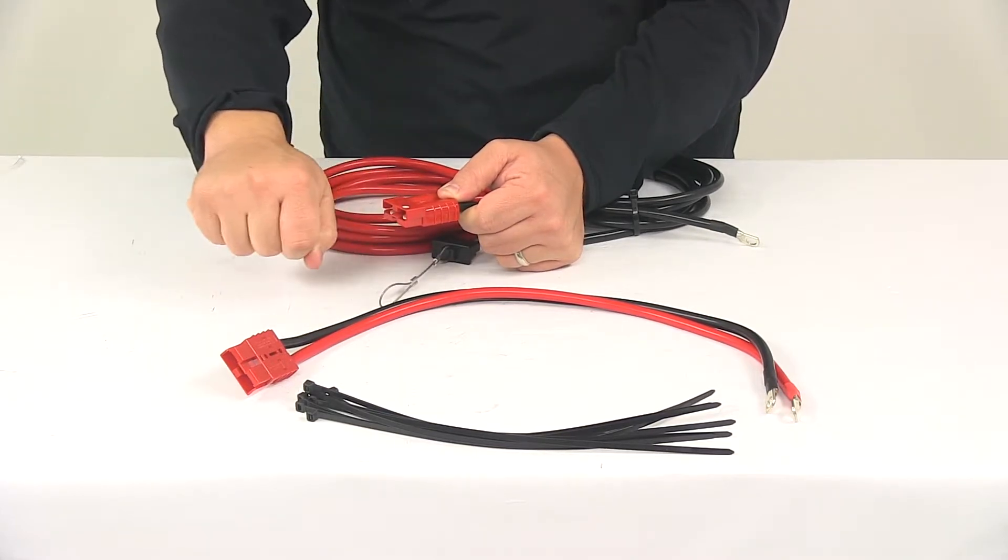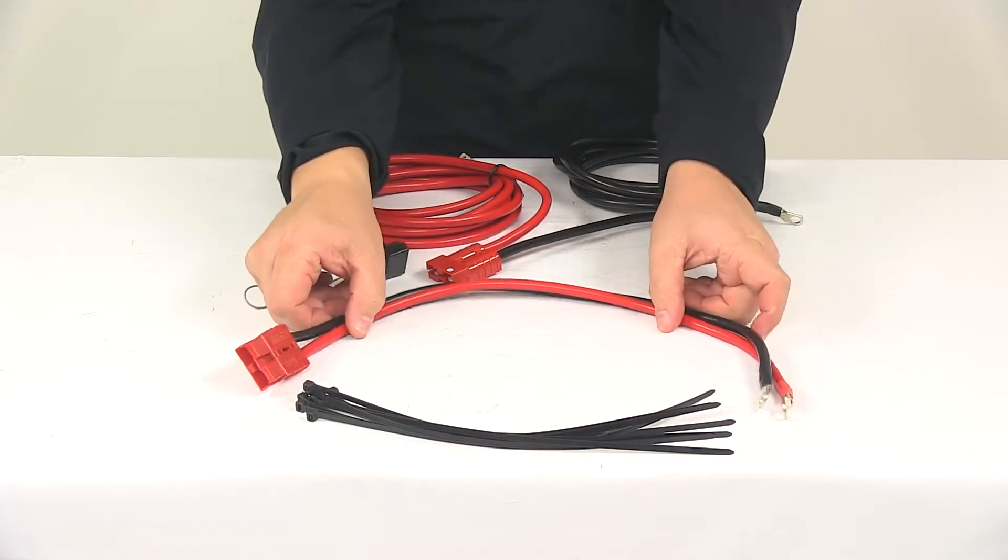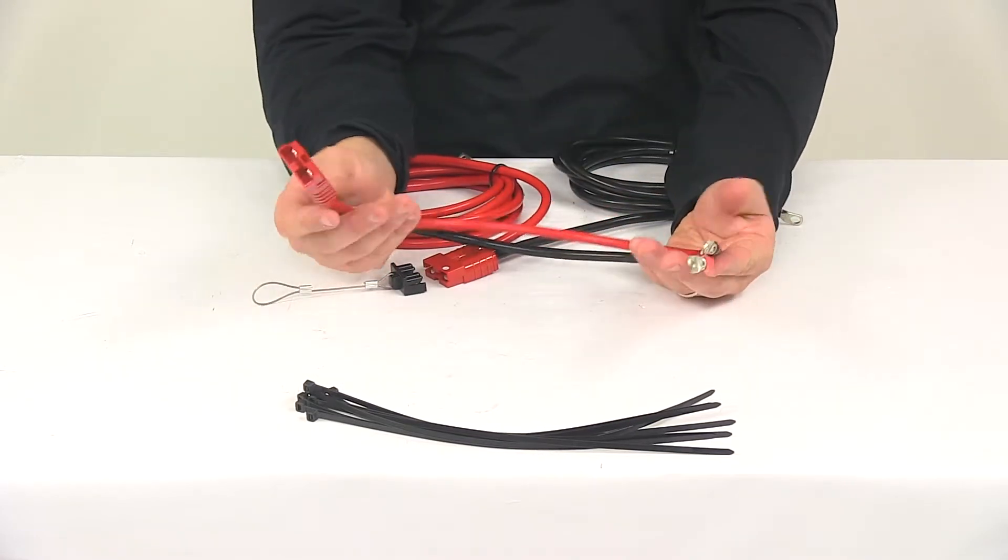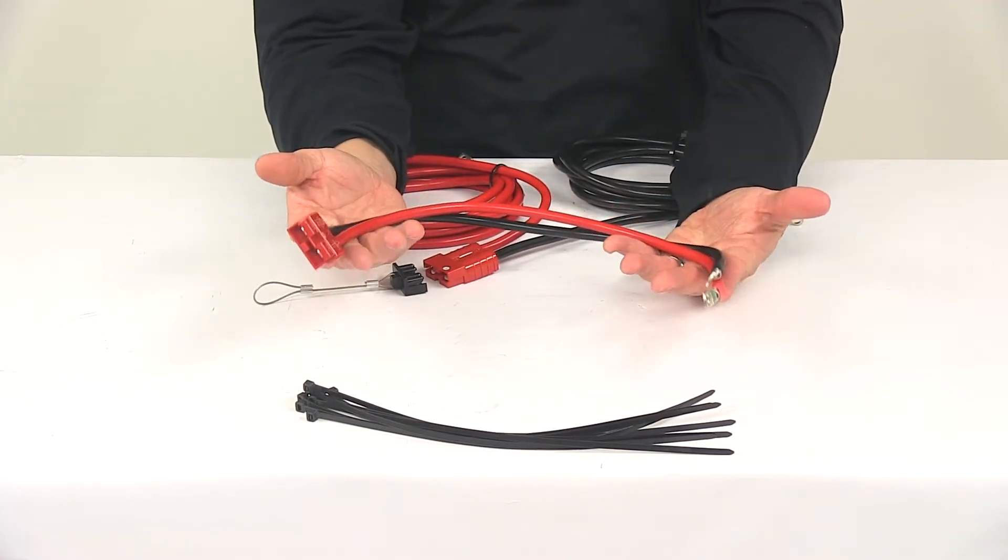When you're ready to disconnect, you unplug it. So it also comes with 20 inch motor leads with a quick connect as well. These leads connect to the winch.